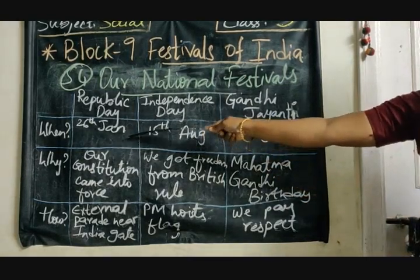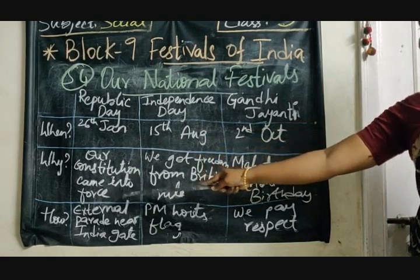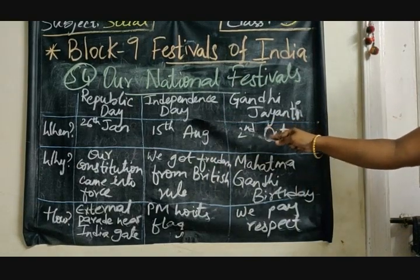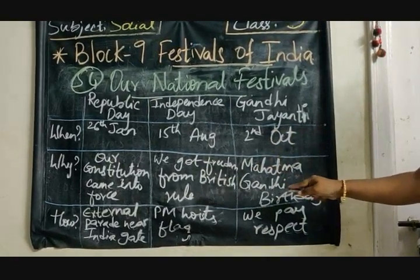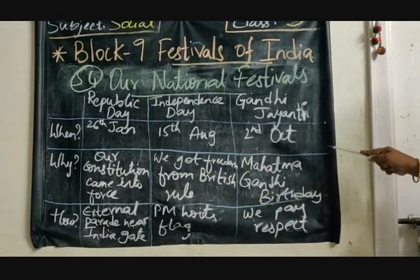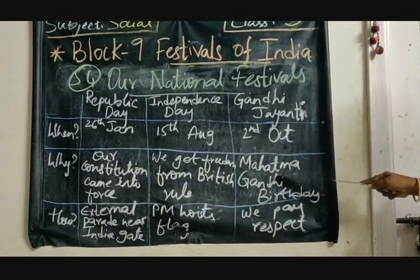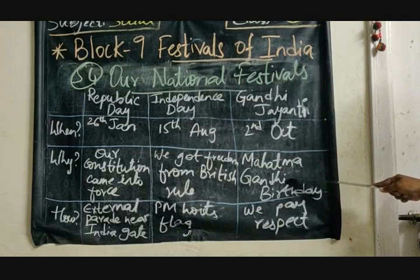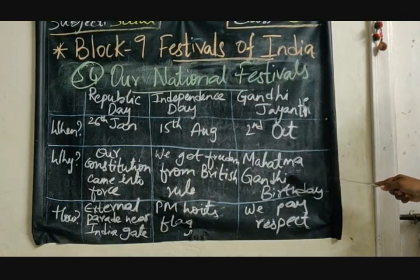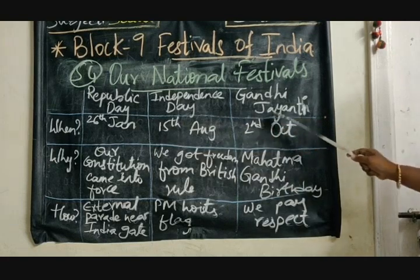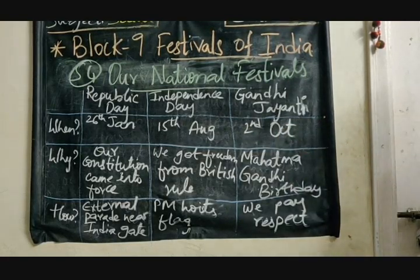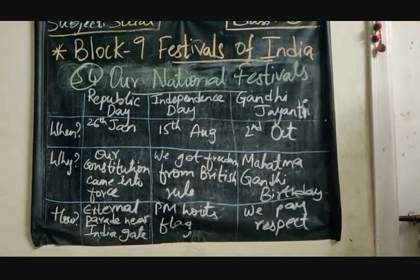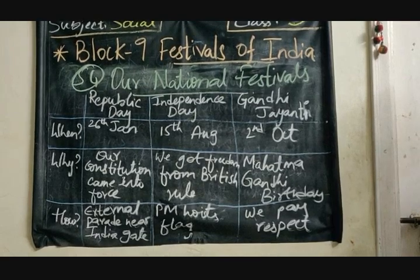What festivals have we just read about? We have read about Republic Day, Independence Day and Gandhi Jayanti. Republic Day is celebrated on 26th January, Independence Day on 15th August, and Gandhi Jayanti on 2nd October. Why is Republic Day celebrated? Because our constitution came into force. Why do we celebrate Independence Day? Because we got freedom from British rule. Why do we celebrate Gandhi Jayanti on 2nd October? Because it is Mahatma Gandhi's birthday.